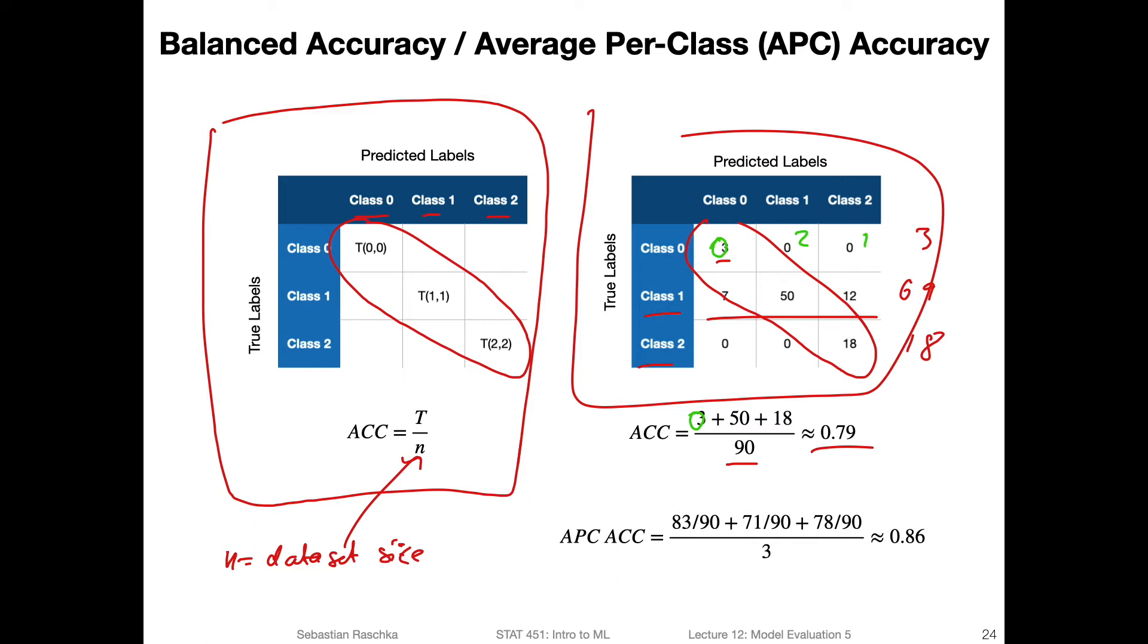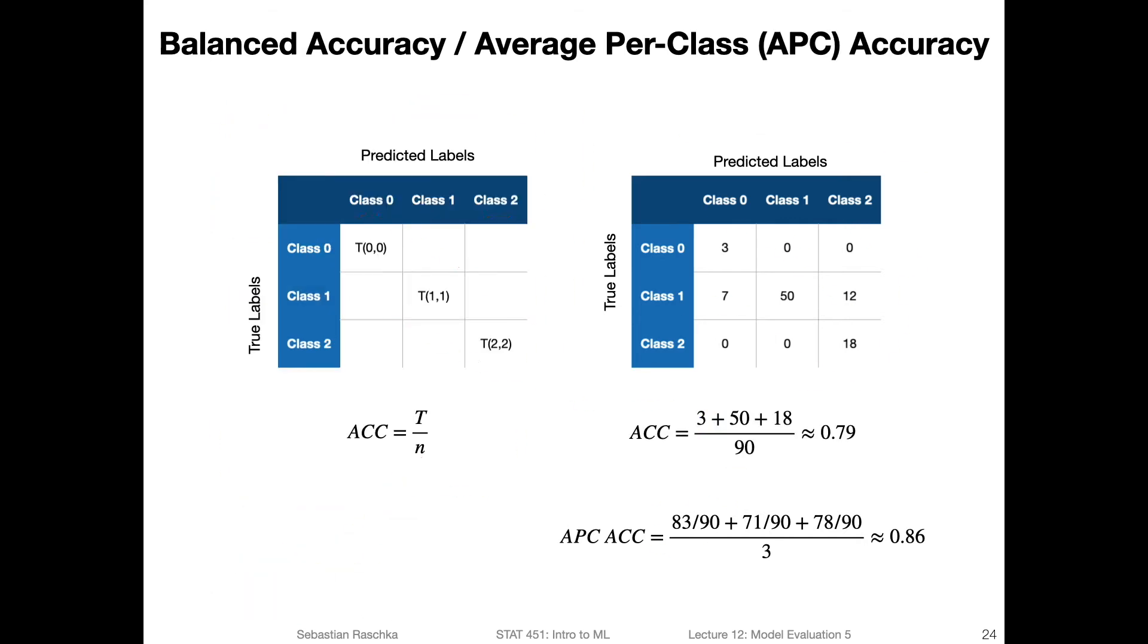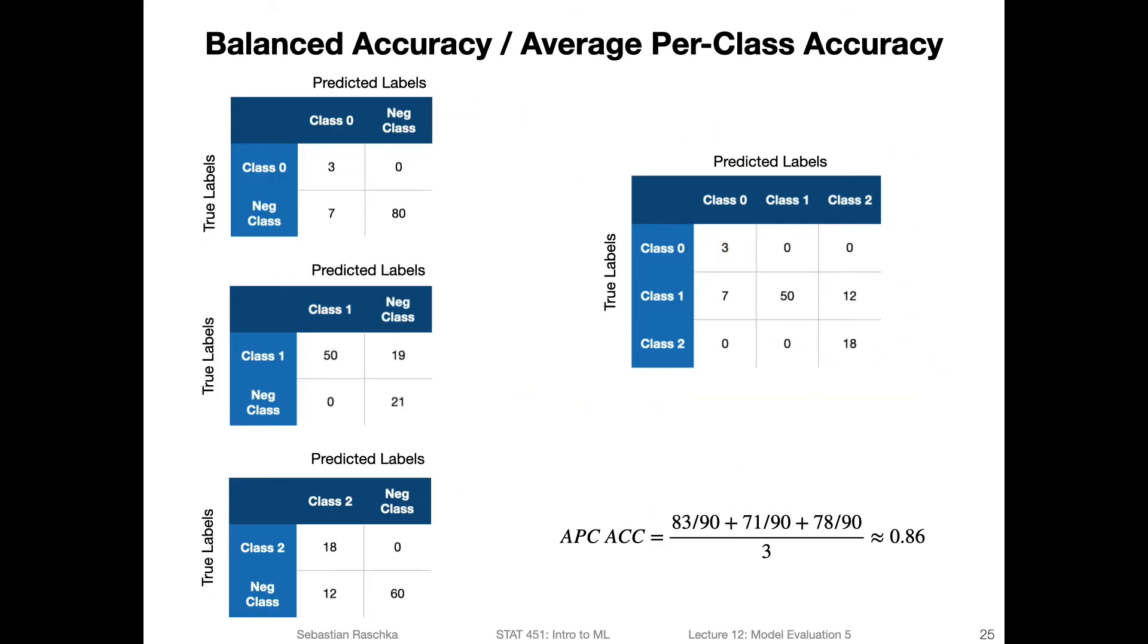The average per-class accuracy aims to have a more balanced view on that, so each class counts equally. In this case, on how it's computed, it's computing the accuracy for each class. So the accuracy for class zero versus all the other classes. It's a little bit complicated to look at it just like this, which is why I made a separate slide. What we are doing is we are computing three accuracies and averaging over the three. You can think of it as a binary accuracy.